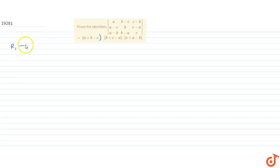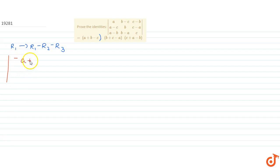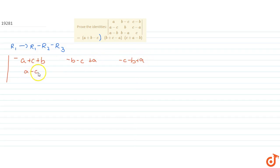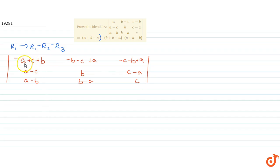First, the row transformation R1 → R1 - R2 - R3. Using this operation we get the first row as (-a+c+b), (-b-c+a), (-c-b+a), and the remaining rows are (a-c), (a-b); b, (b-a); (c-a), c.